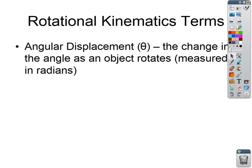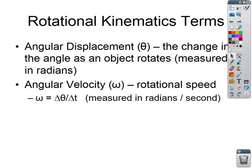We have angular velocity; the symbol is omega — that little w is the lowercase omega. It tells you how quickly something is rotating; it's rotational speed. The standard formula, if rotating at a constant speed, would be theta over time — just like velocity is distance over time, angular velocity would be theta over time, measured in radians per second.